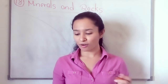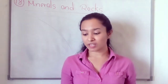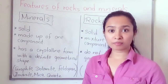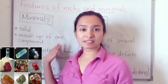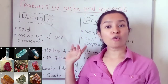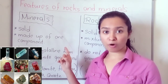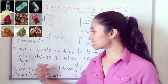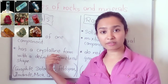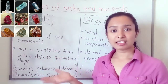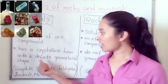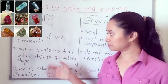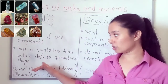How can we identify these? Let's discuss the features of rocks and minerals. Let's start from minerals. Minerals are solid — they are a solid component made up of one component. And they have a crystalline form with a definite geometrical shape.